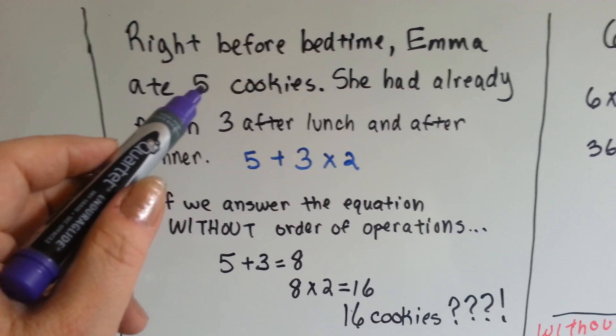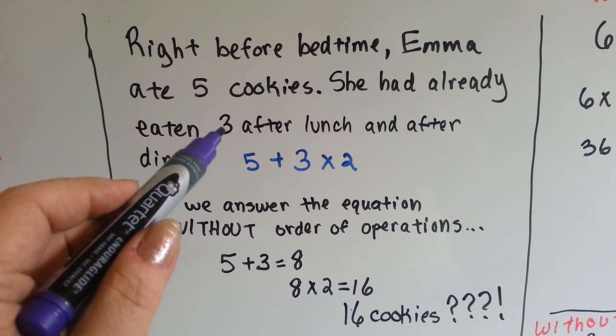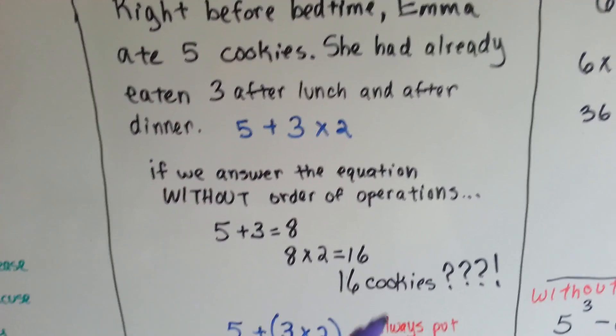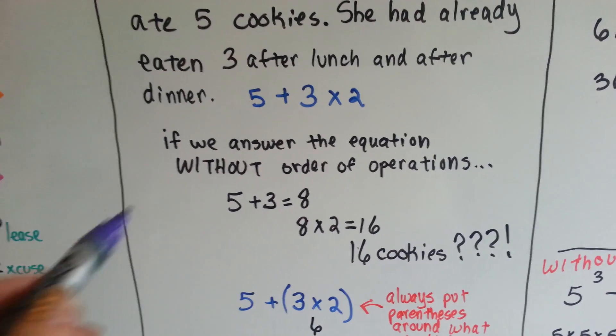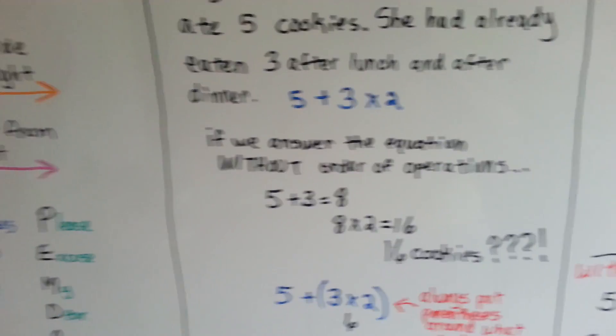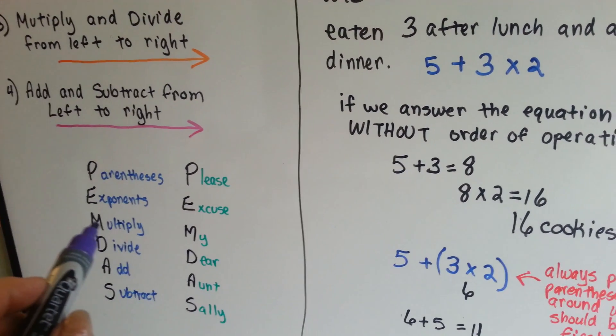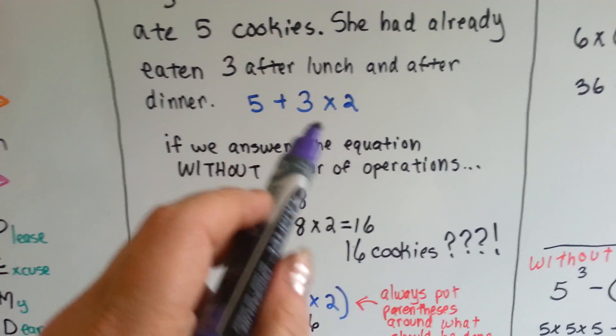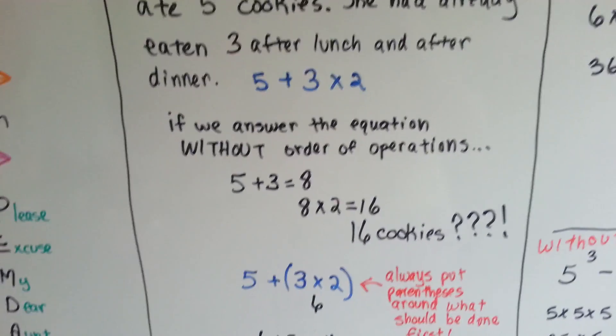Wait a minute. She had 5 cookies, then she had 3, and then she had 3. Well, what happened? Well, we didn't do the order of operations. We were supposed to multiply before we added. So, we were supposed to do this before we added.